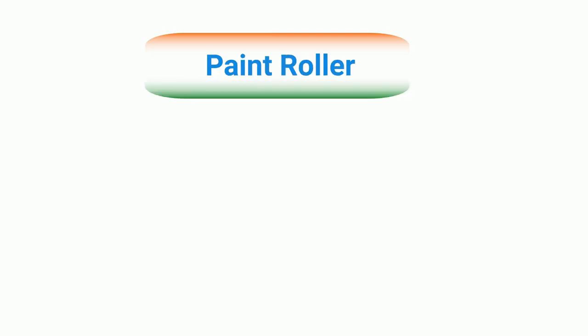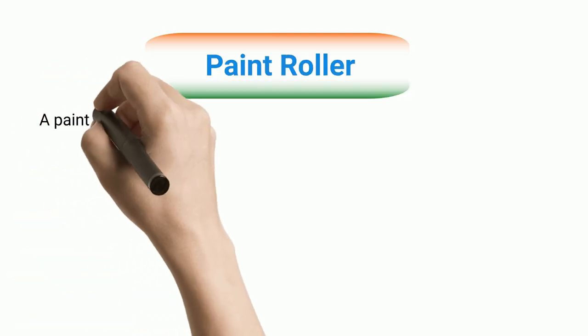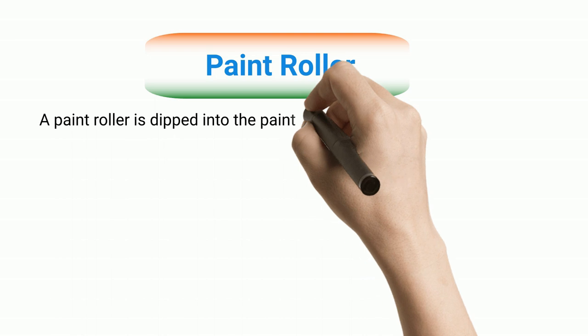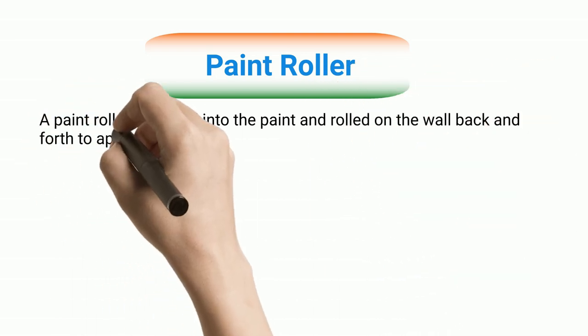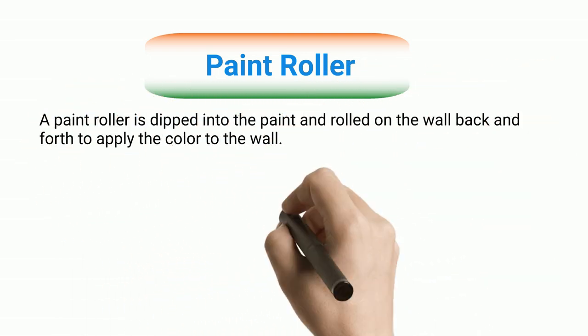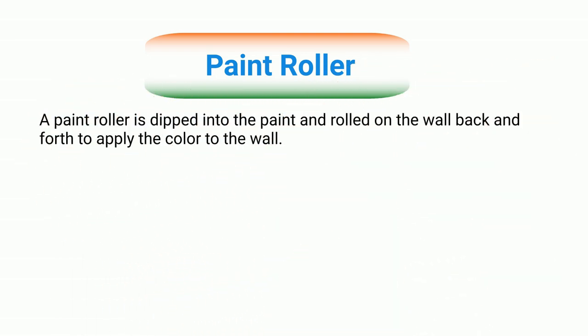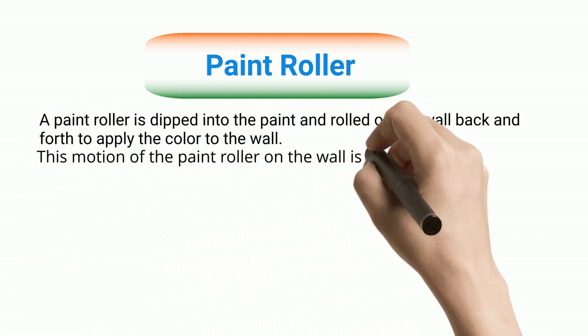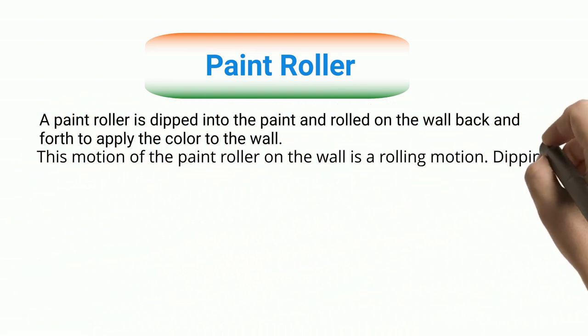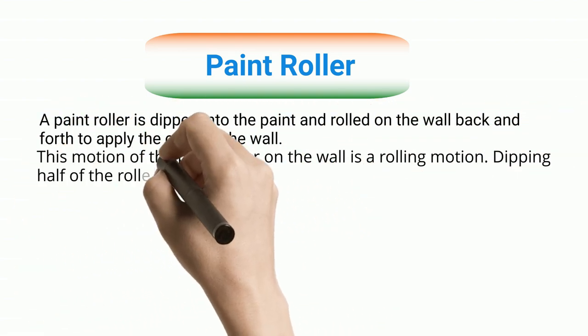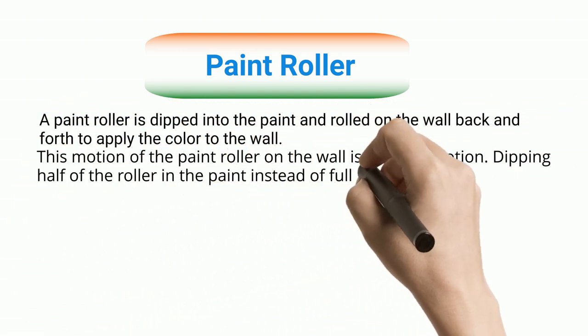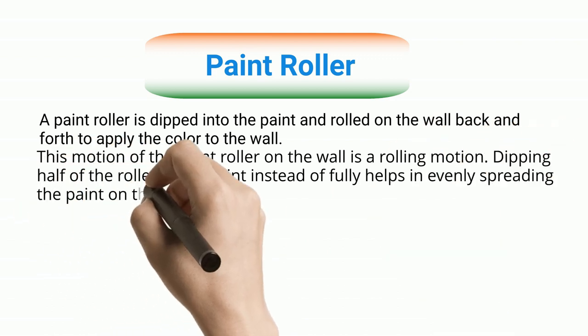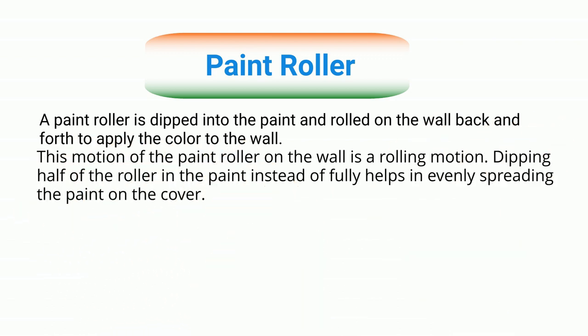Paint roller. A paint roller is dipped into the paint and rolled on the wall back and forth to apply the color to the wall. This motion of the paint roller on the wall is a rolling motion. Dipping half of the roller in the paint instead of fully helps in evenly spreading the paint on the cover.